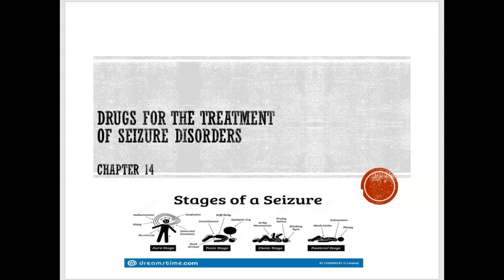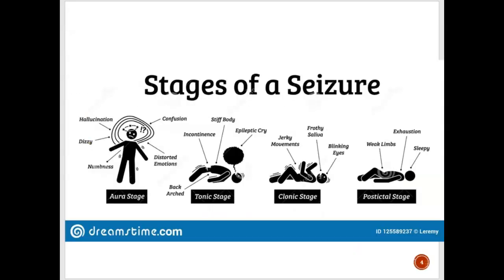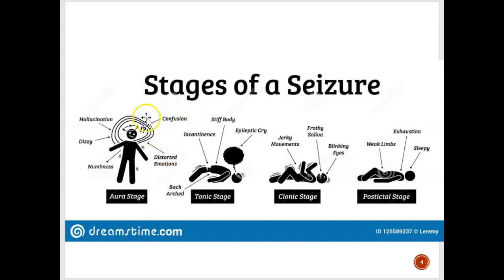This lecture is on seizure disorders and the drugs we can use for people that have seizures. There are four different stages of a seizure. The first stage is called the aura stage — before a seizure, you start to feel dizzy, numb, have weird emotions, confusion, a strange taste in your mouth, or become very sensitive to light.